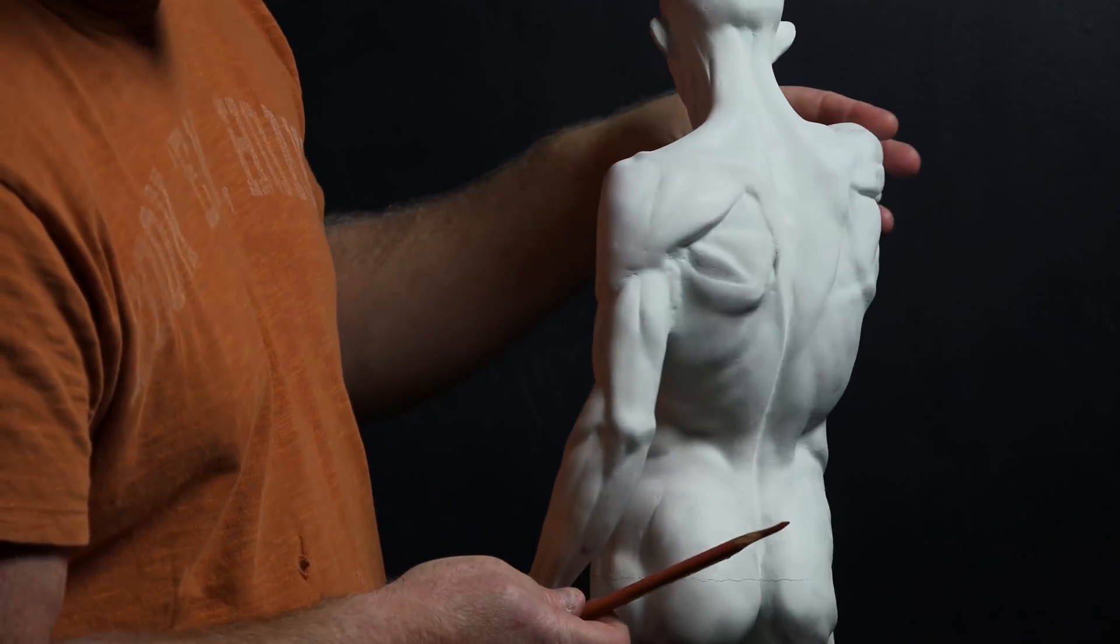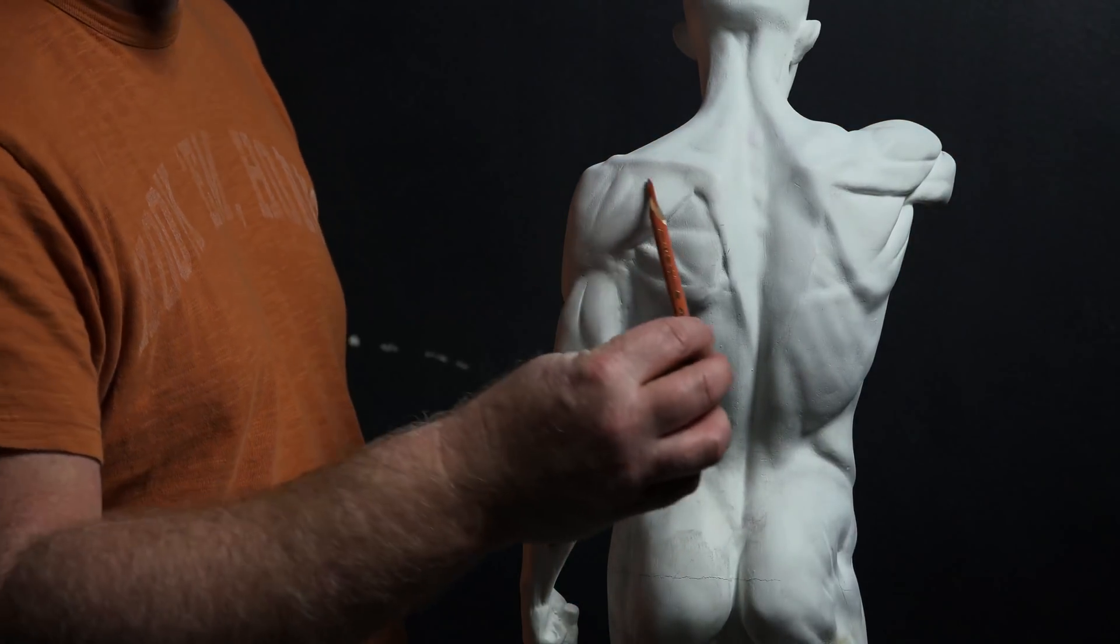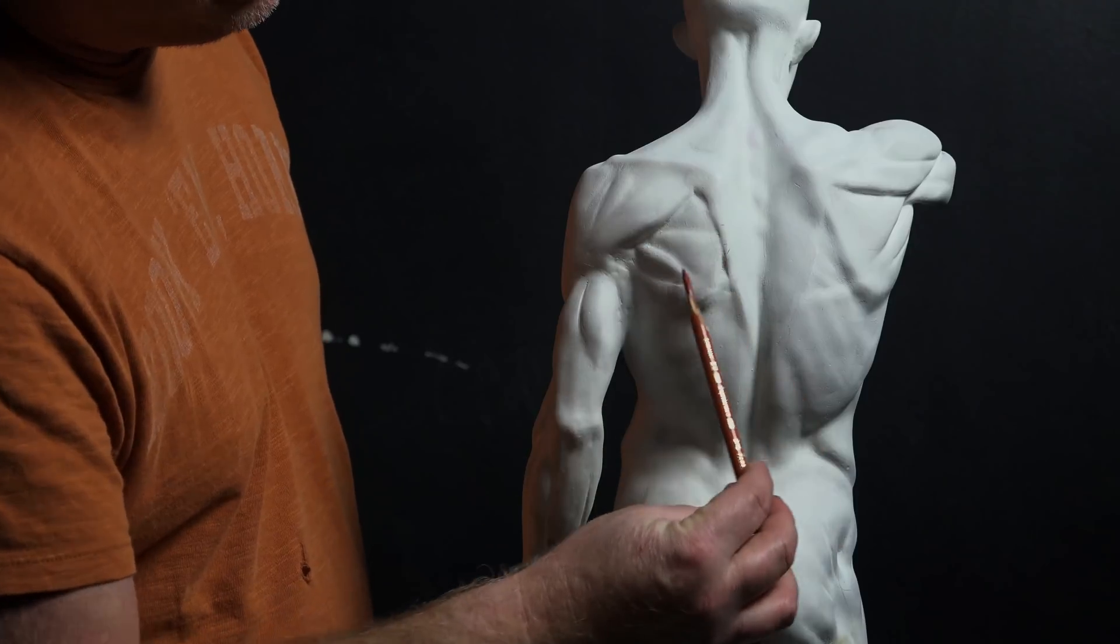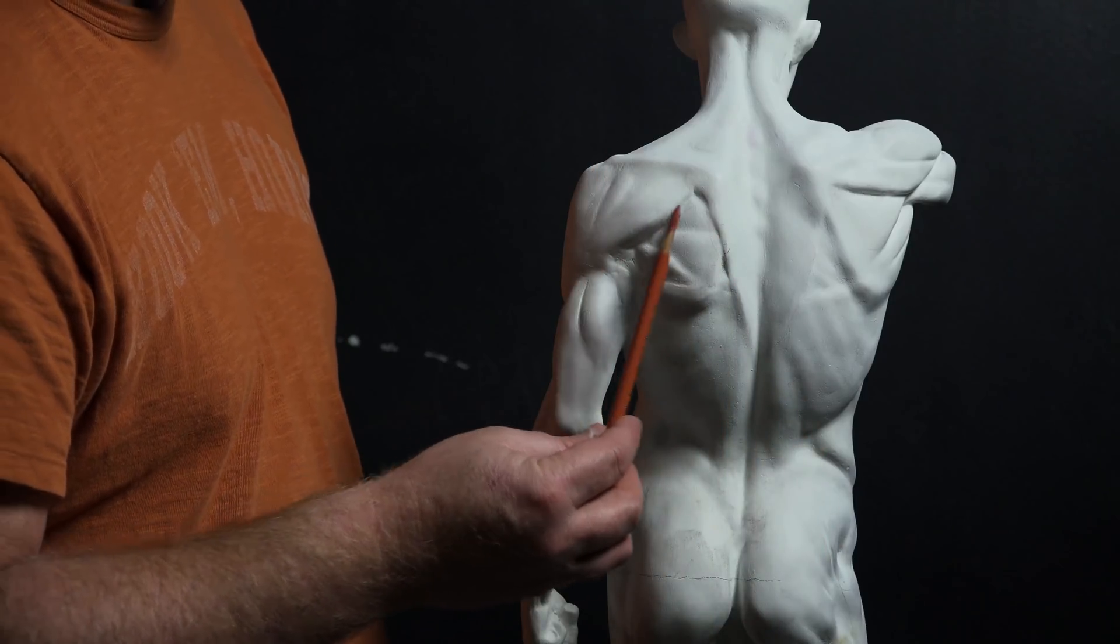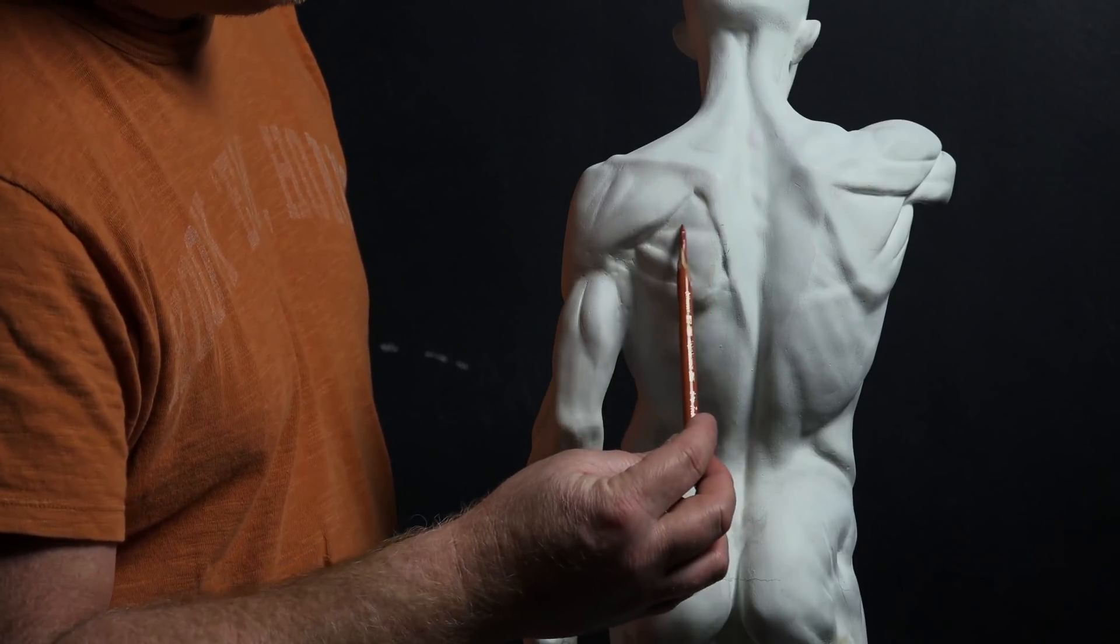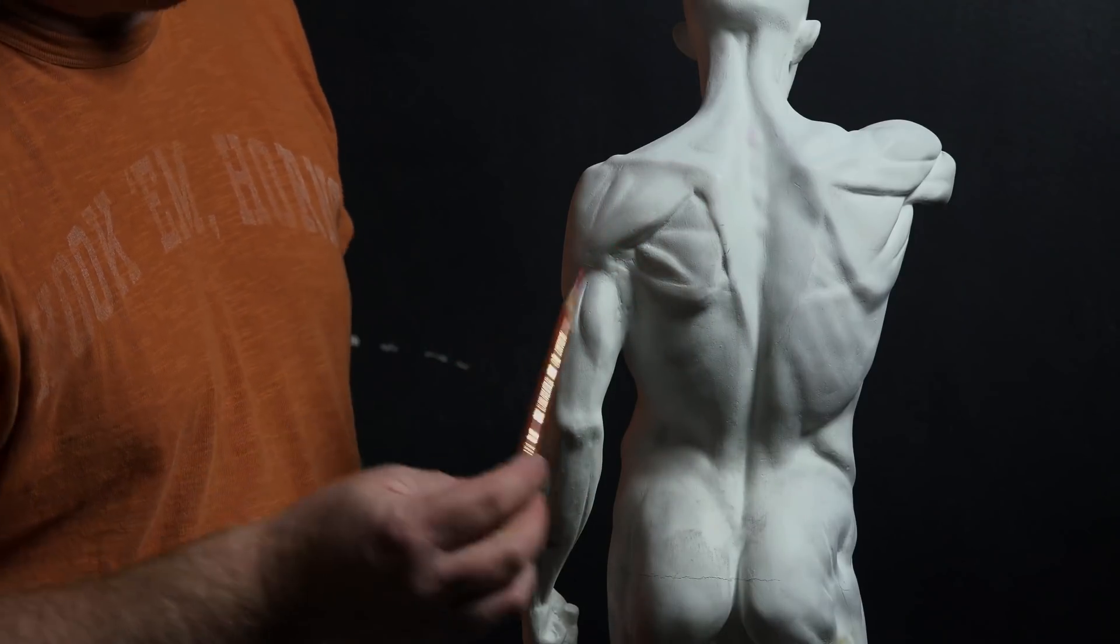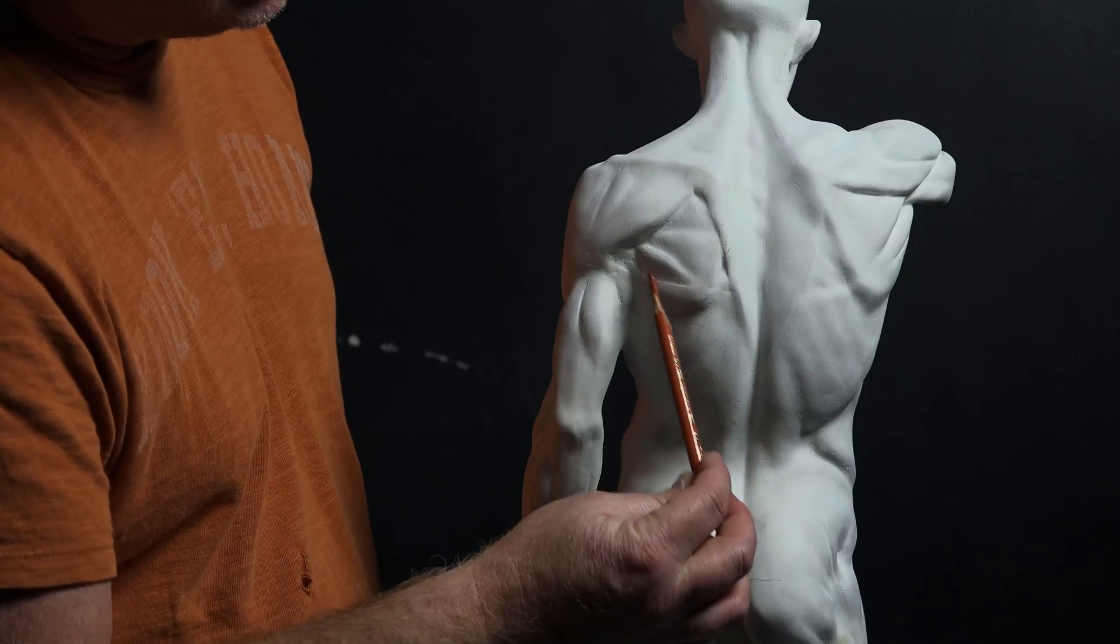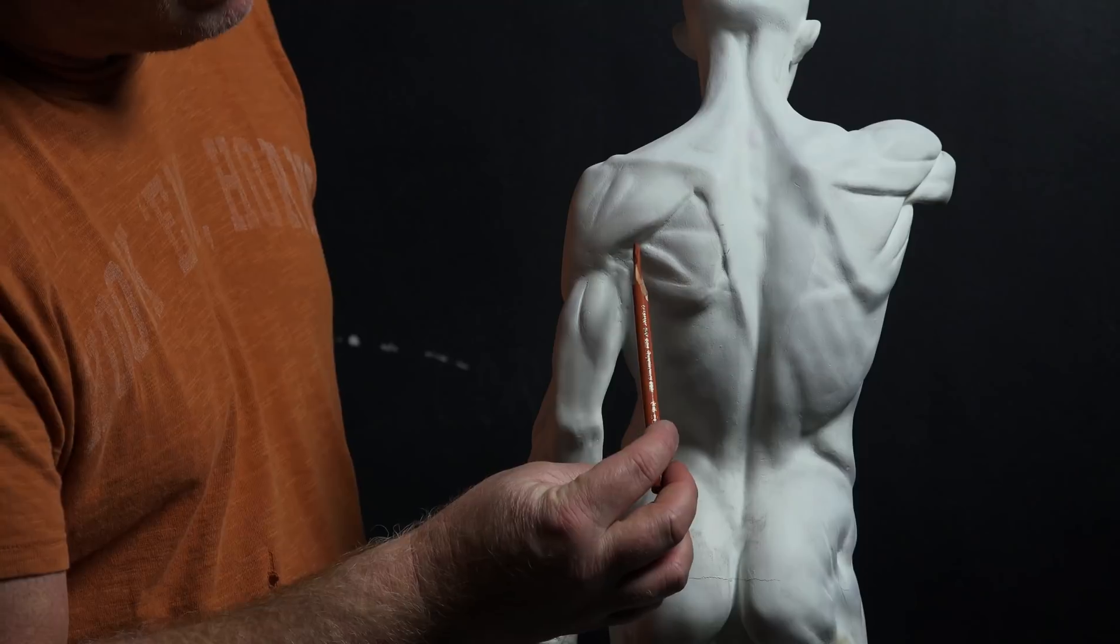As we go on the back, we talked a little bit about the fossa here of the scapula. In through here, we've talked about the supraspinatus in here. You really don't see it on the model, the infraspinatus. You might see it a little in the window between the trapezius, the deltoid here, and then the latissimus dorsi. What I'm talking about is this little window.